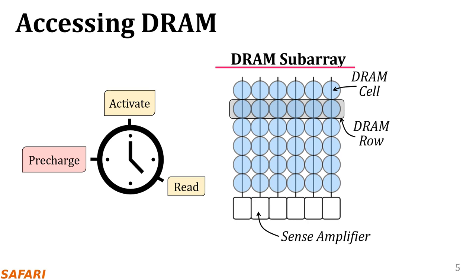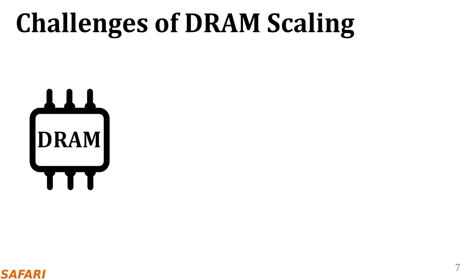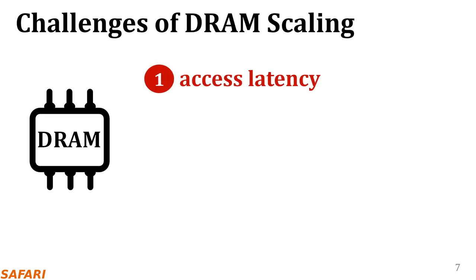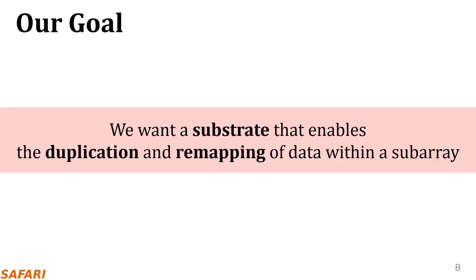Although the memory controller has received the data, it still needs to perform one more operation to prepare DRAM for future access to a different row. The memory controller issues a precharge command to close the open row. The precharge operation turns both the row and the sense amplifiers back to their initial states. This is basically how DRAM is accessed. Now let me explain how we slightly modify DRAM to implement the CROW substrate. DRAM scaling leads to these three key challenges: access latency, refresh overhead, and exposure to vulnerabilities such as rowhammer which reduce DRAM reliability. Our goal in this work is to develop a substrate to overcome the DRAM scaling challenges by duplicating and remapping data within a subarray.